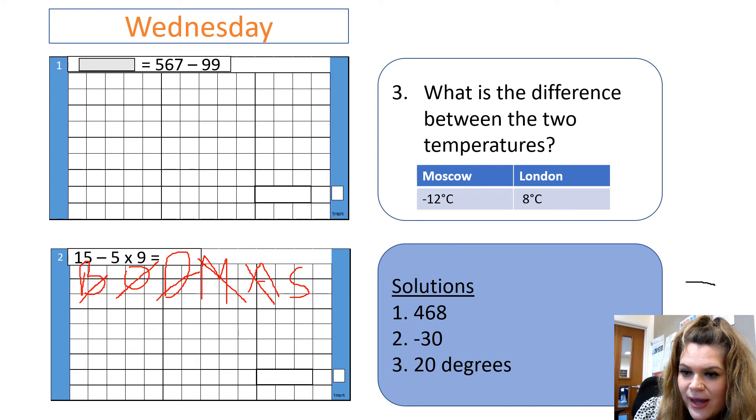So, let's start off with minus 12 here. I know I need to add 12 on in order to get to 0. So, I've got 12. And then, I need to get to 8 from 0. So, I need to add another 8. 12 add 8 is 20. So, the difference is 20 degrees.